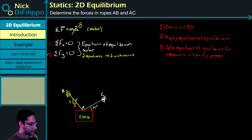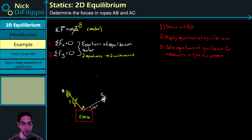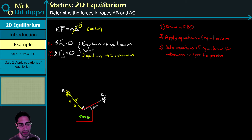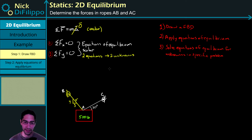Now let's look at an example. I've drawn a simple diagram: it's a block suspended with two different ropes, and the block has a weight of 500 pounds. We're asked to figure out the force in rope AB and the force in rope AC.